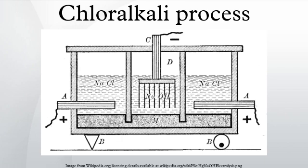A DC current is passed through the cell and the NaCl splits into its constituent components. The membrane passes Na⁺ ions to the anode compartment where sodium hydroxide forms in solution. The membrane allows only positive ions to pass through to prevent the chlorine from mixing with the sodium hydroxide. The chloride ions are oxidized to chlorine gas at the anode, which is collected, purified, and stored.